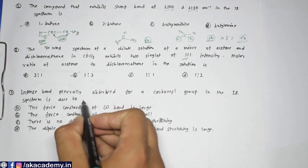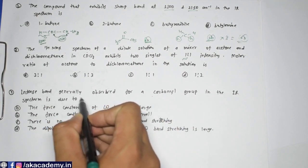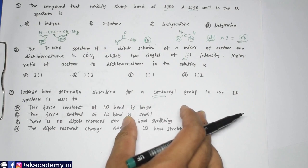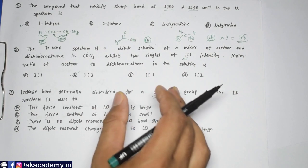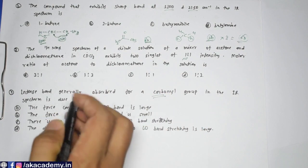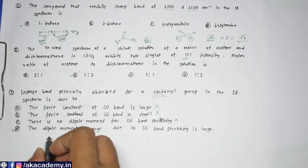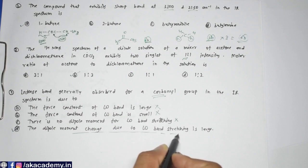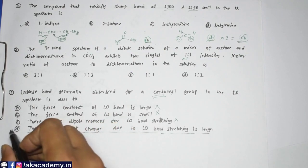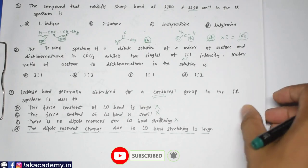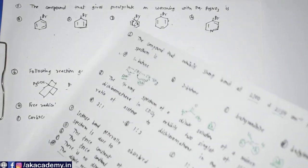The next question: why do we get an intense band for the carbonyl group in the IR spectrum? In IR, we get the spectrum because of the dipole moment. The correct answer is option D: the change in dipole moment due to C=O bond stretching is large. That's why we get an intense band for the carbonyl group.